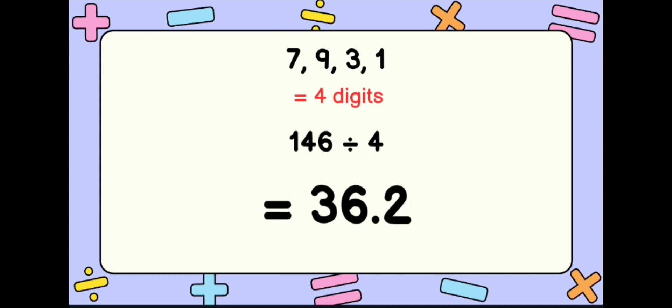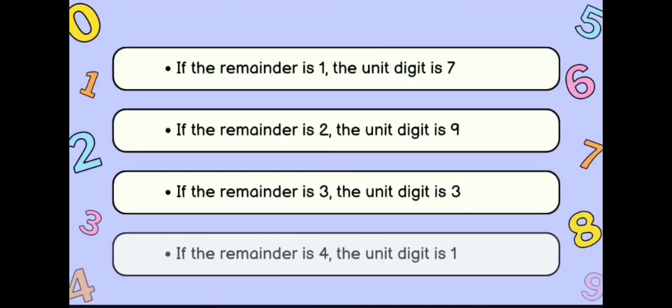So we divide 146 by 4. The quotient is 36 with a remainder of 2. Next, we identify the unit digit using the remainder. If the remainder is 1, the unit digit is 7. If the remainder is 2, the unit digit is 9. If the remainder is 3, the unit digit is 3. And if the remainder is 4, the unit digit is 1.